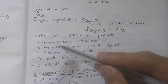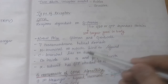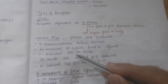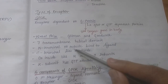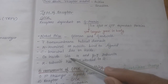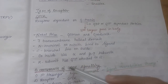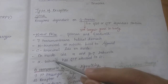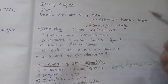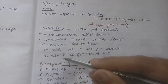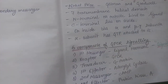GPCRs have seven transmembrane helical domains. The N-terminal is present on the outer side, which binds to the ligand, and the C-terminal is present on the inner side. On the inner side, they have alpha and beta-gamma subunits forming a dimer. The alpha subunit has GDP attached to it in the inactivated state, or GTP in the active state.